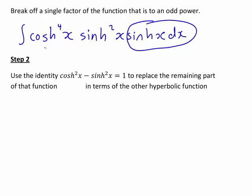So in this case, we want everything else to be written in terms of cosh(x). And that means we want to replace the remaining part of sinh(x) function, which here is the sinh²(x) part.